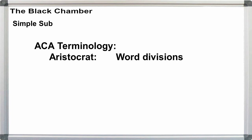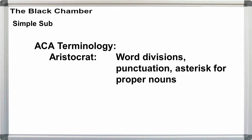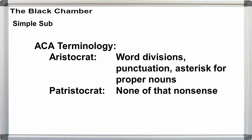With word divisions, or aristocrats, we keep the spaces and punctuation. Some people prefer to also use an asterisk to identify proper nouns and place names. This is just a nicety to the solver to warn them the word may not be in their word lists.